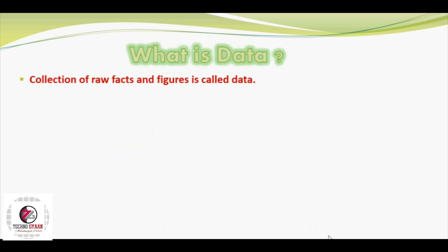Now we need to understand what data and information actually are. The definition of data: collection of raw facts and figures is called data. These raw facts and figures, which are numbers, are what we call data.